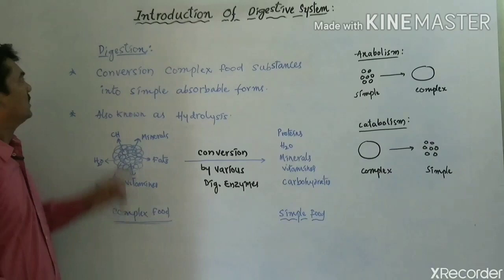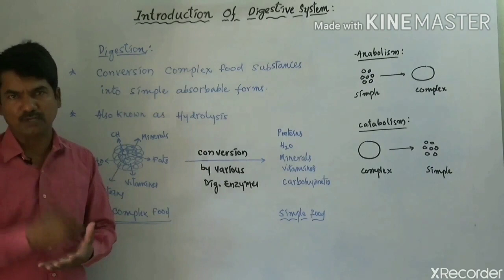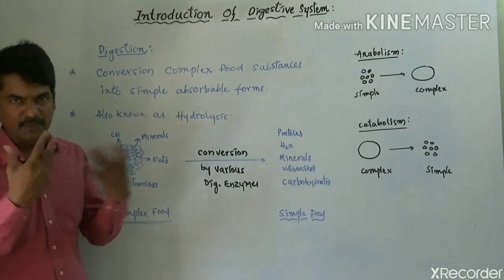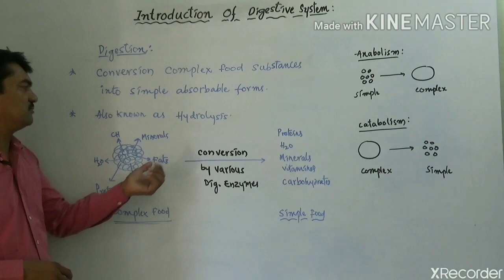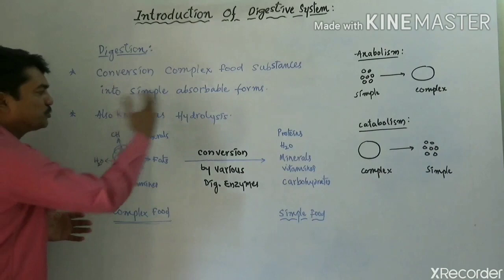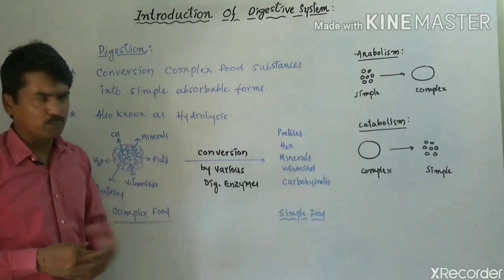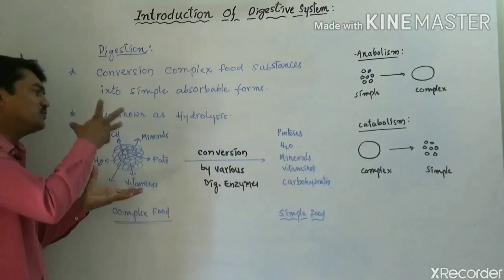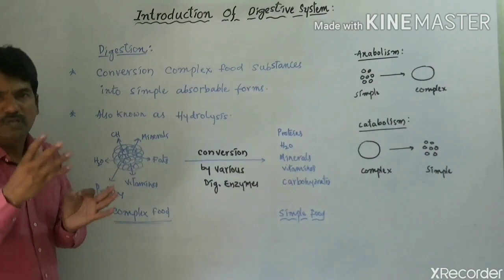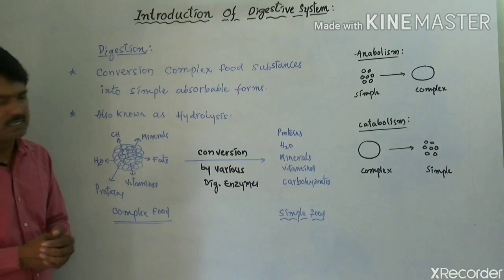Digestion is the conversion of complex food substances into simple absorbable forms. While taking food, the food may consist of various types of food molecules — large substances or complex food substances — composed of carbohydrates, water, proteins, vitamins, fats, minerals, etc. This bulk food, known as large or complex food substances, has to be converted into simple absorbable food molecules, and that process is known as digestion.